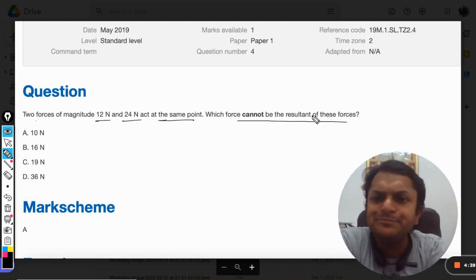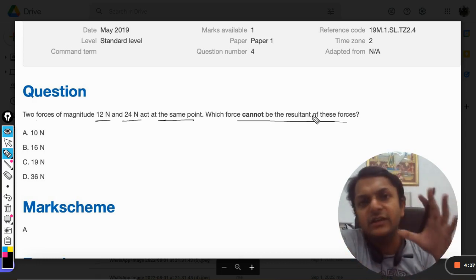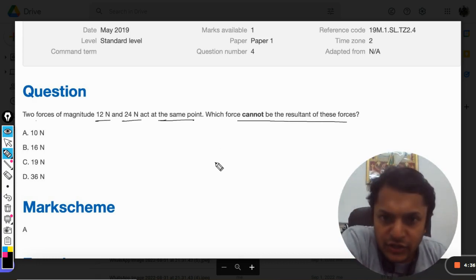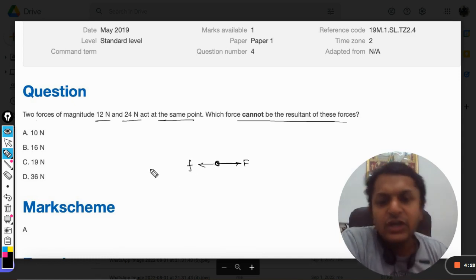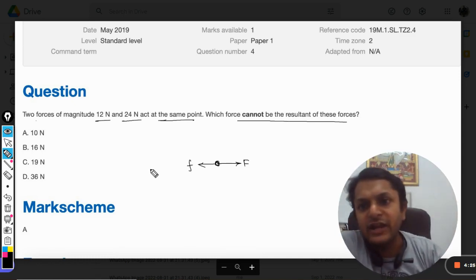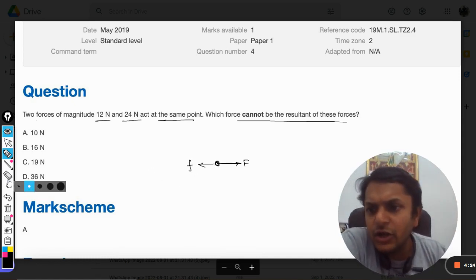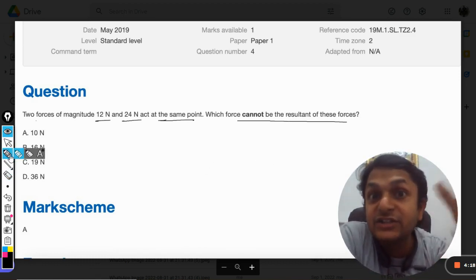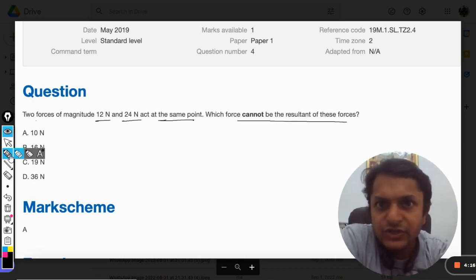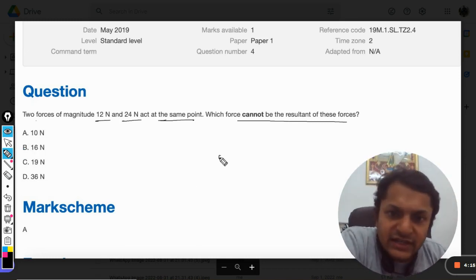There is a very beautiful concept here. Let us say this is the body and this force is acting in the forward direction and there is another force which is acting in the backward direction. Although the question says that the two forces are acting on the body, the direction is not known to us, so it could be anything.